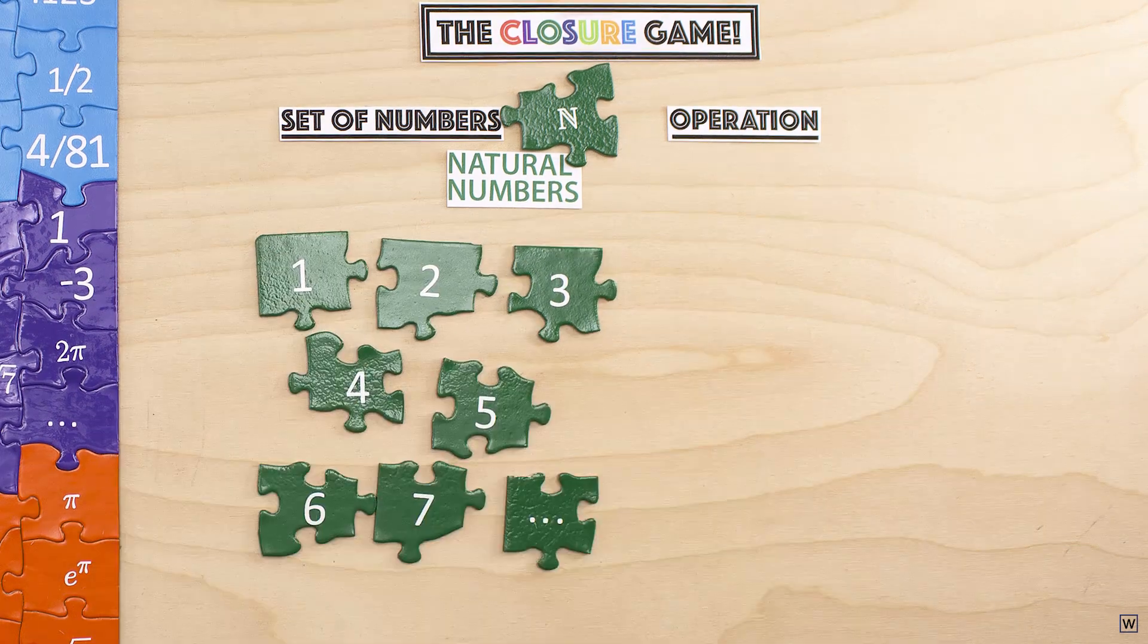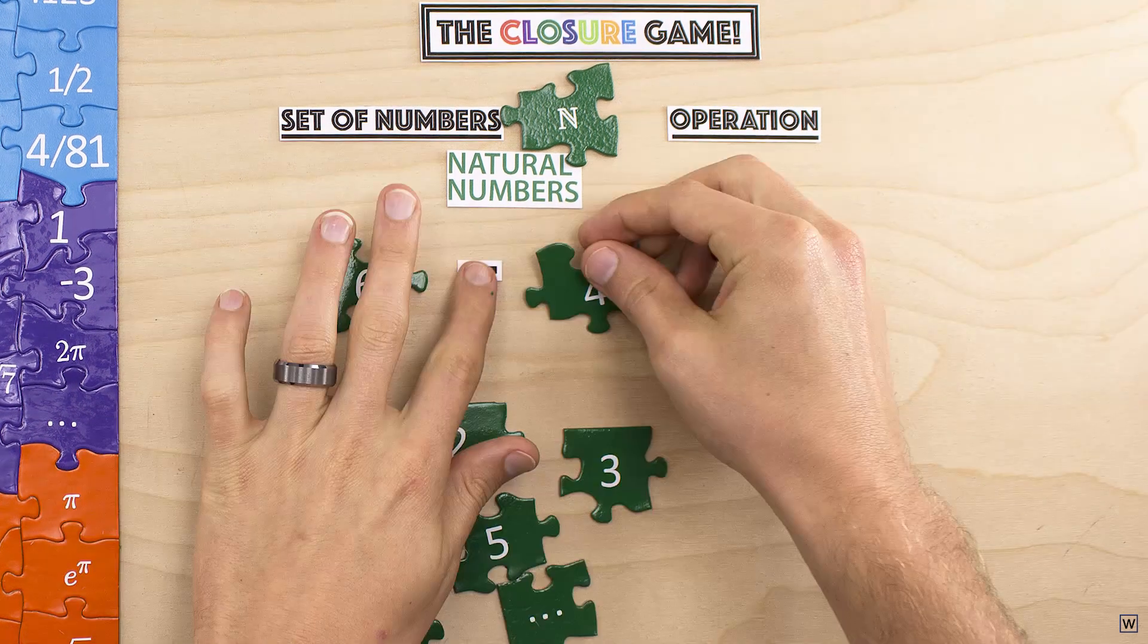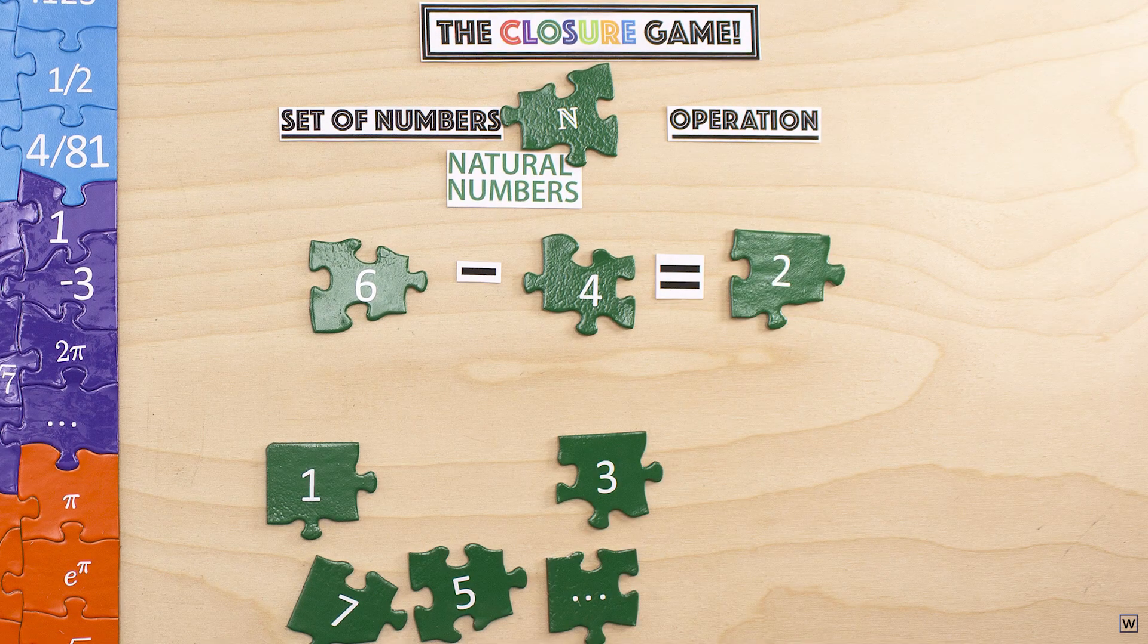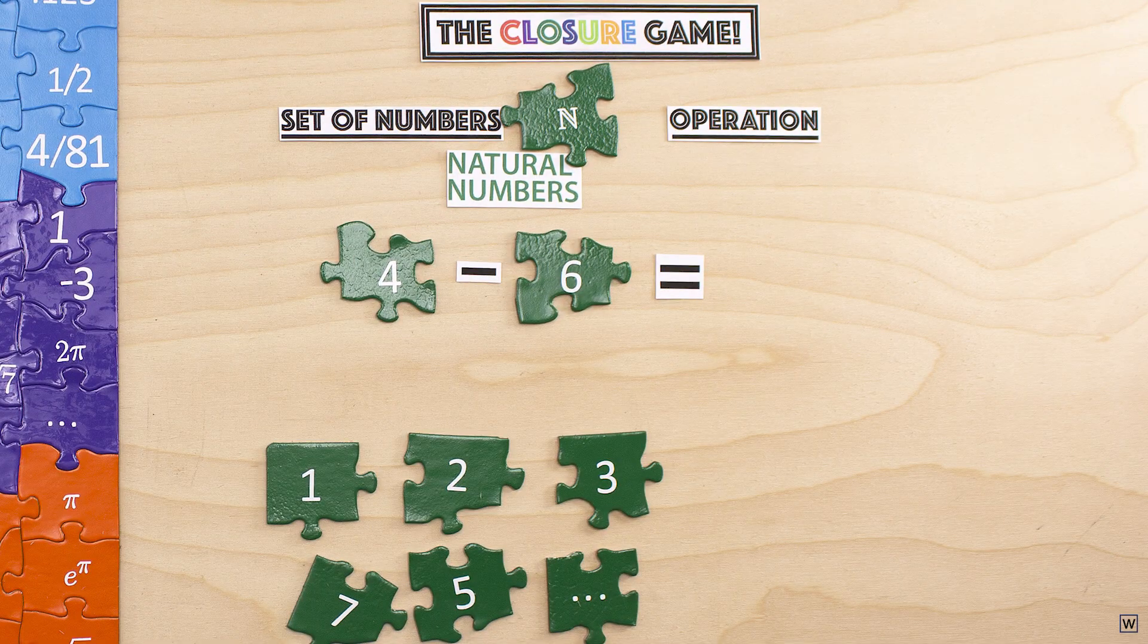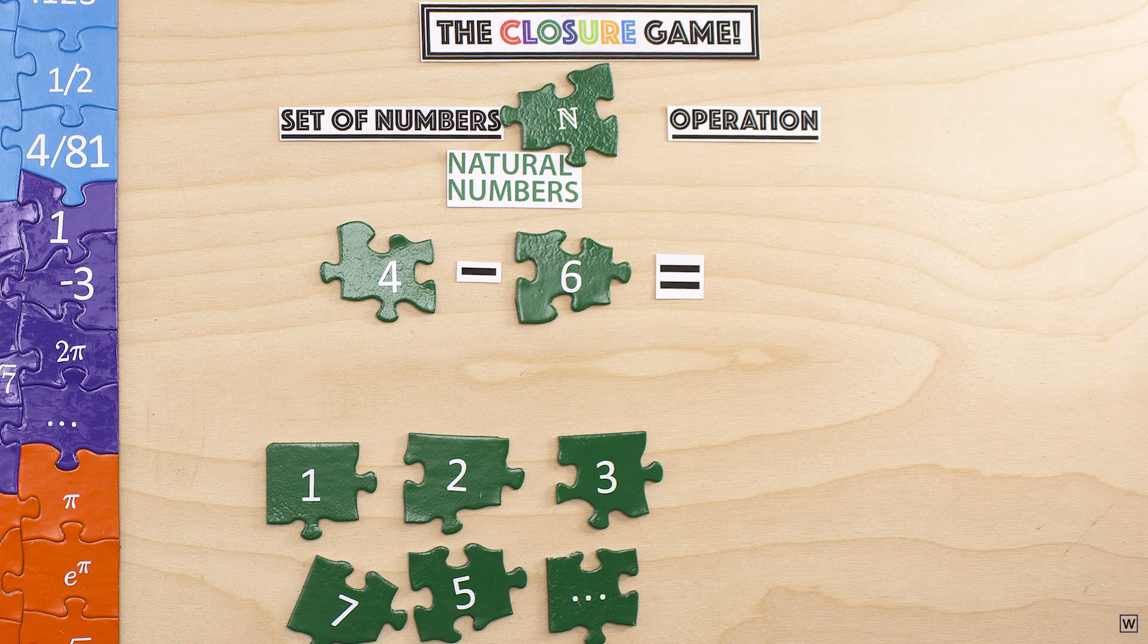Next, let's try the set of natural numbers and the operation of subtraction. For some pairs of natural numbers, like six and four, things work out just fine. Six minus four is two, which is a natural number. But what about four minus six? This results in an answer that is nowhere to be found in our set of natural numbers, so our set is not closed under subtraction.